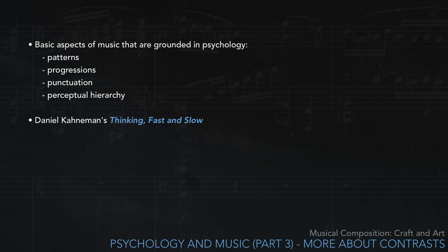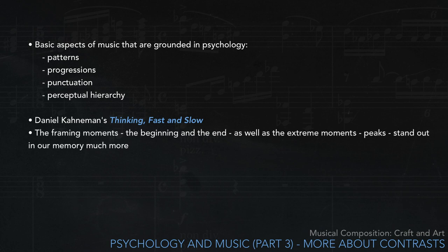In Daniel Kahneman's book Thinking Fast and Slow, he mentions an experiment showing that during, say, a colonoscopy, not all the moments in time were remembered equally clearly. In particular, the framing moments - the beginning and the end - as well as the extreme moments, peaks, stand out in our memory much more clearly than the durational details of the whole experience.